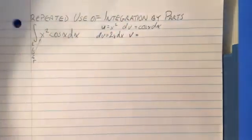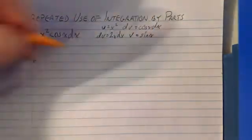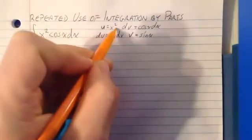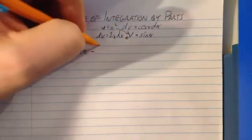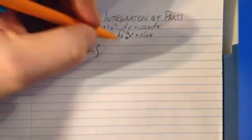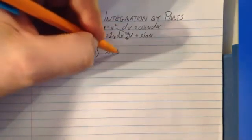Then you differentiate your u. So du is 2x dx, and v is the antiderivative of your dv. So sine x right there. And then you follow the pattern u times v. So x squared sine x minus the integral of v du. So sine x times 2x dx. I'm going to factor the two out and talk about what to do with that.